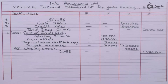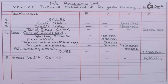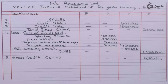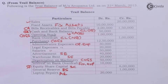Cost of goods sold is deducted from sales to arrive at gross profit. So gross profit is 6 lakhs 30,000. From this we are required to deduct operating expenses.